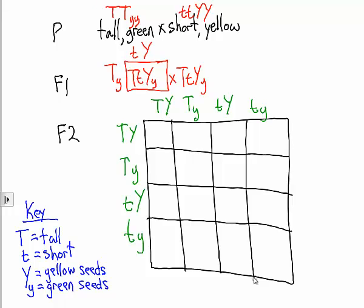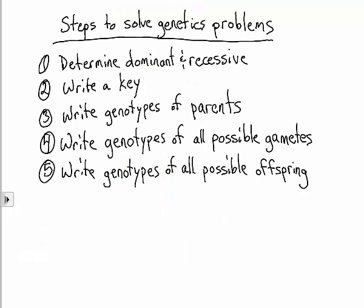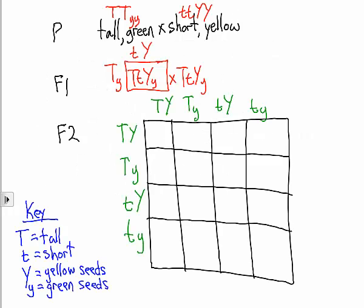So we have a box with 16 squares in it. That'll be a 4x4 matrix. And now we're ready for the last step. Write the genotypes of all possible offspring. Again, we recombine the gametes, all possible combinations.